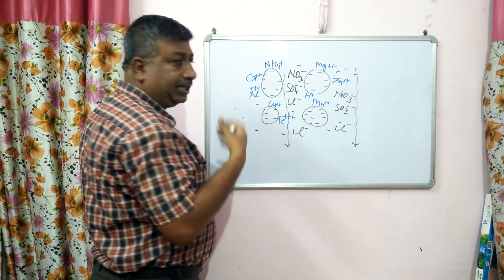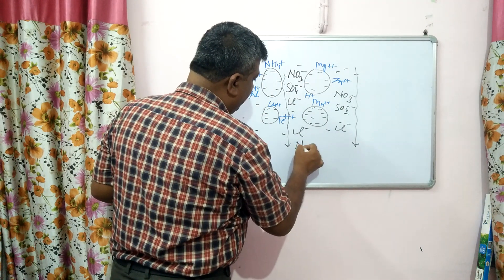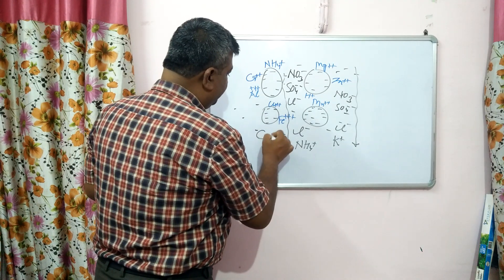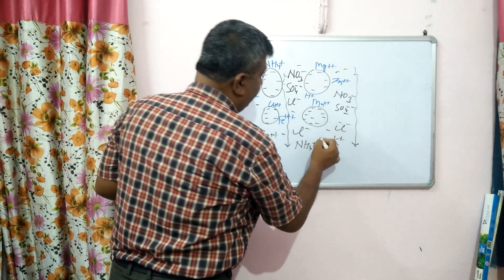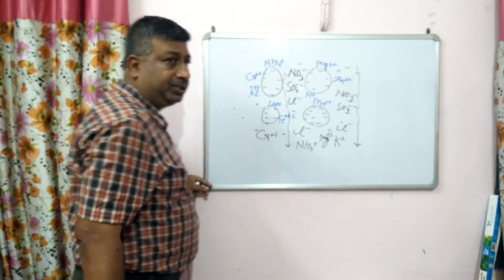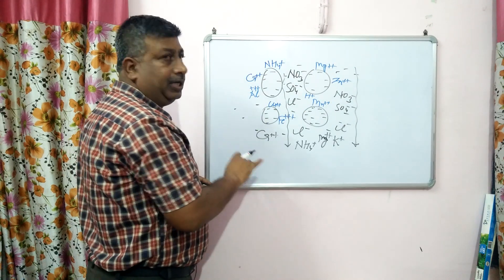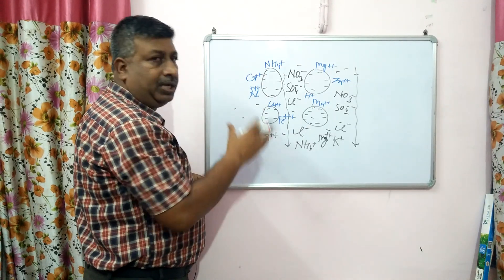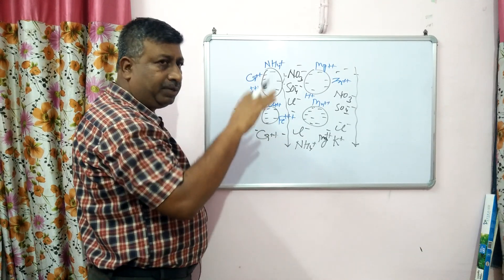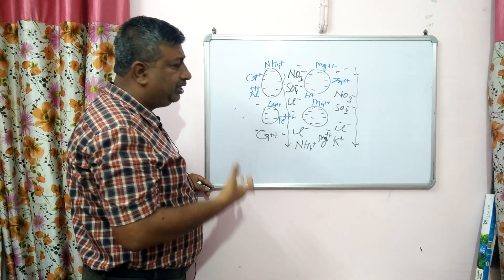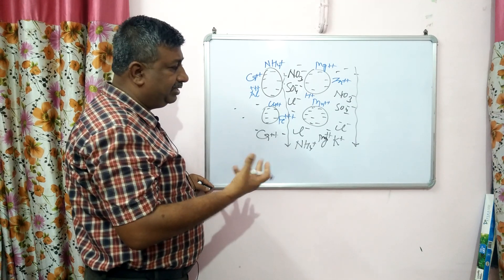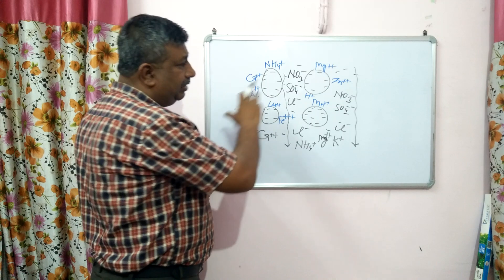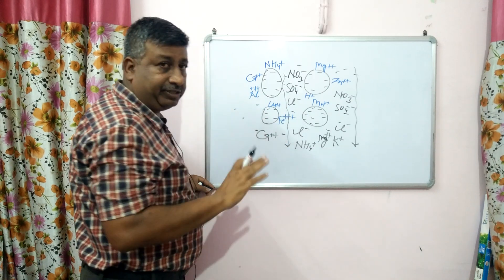If cations like ammonium, potassium, calcium, or magnesium are present in the soil solution, they may also be leached down with percolating water. So it is not that only anions are leached down — cations are also present in soil solution and can leach. Calcium, magnesium, potassium, and ammonium leaching does occur, but there is a dominance of anions because they are repelled by soil particles.